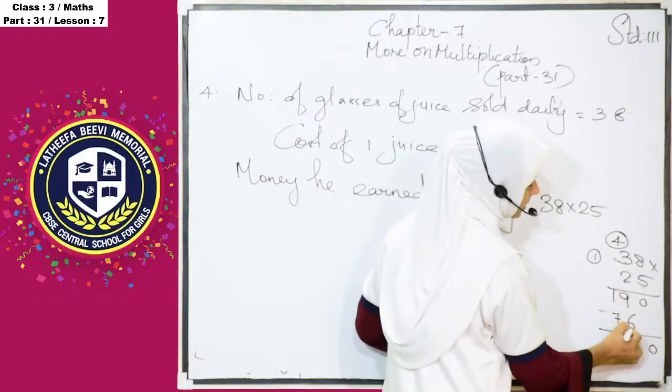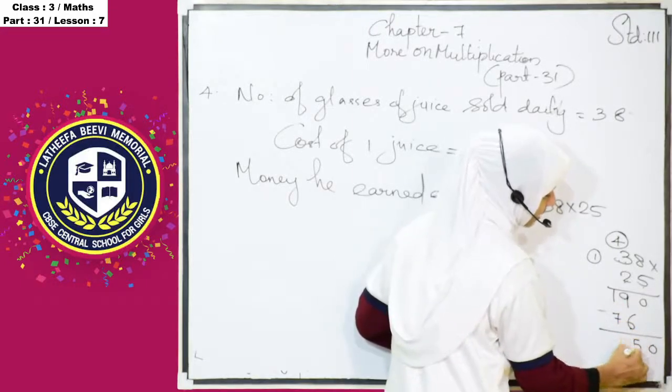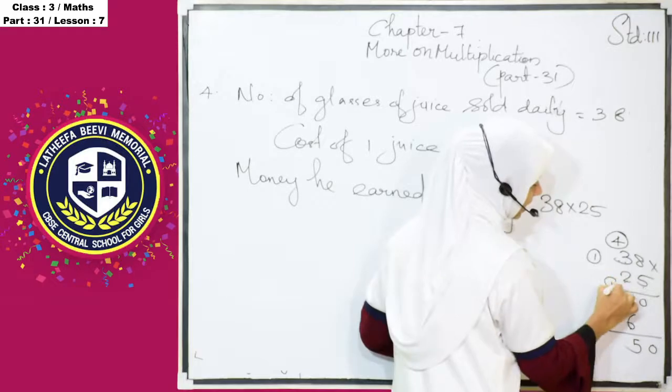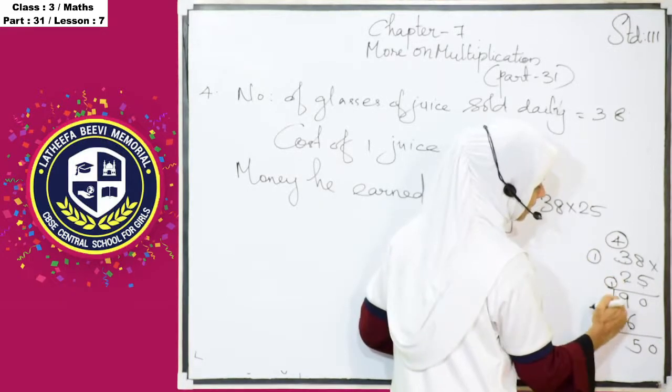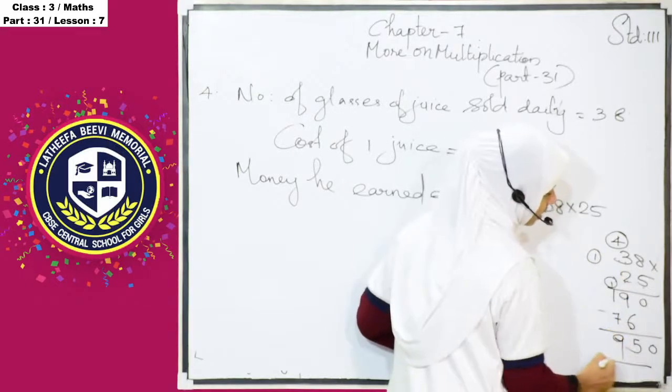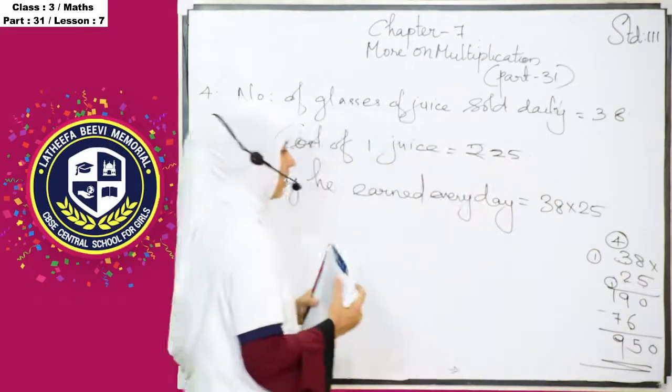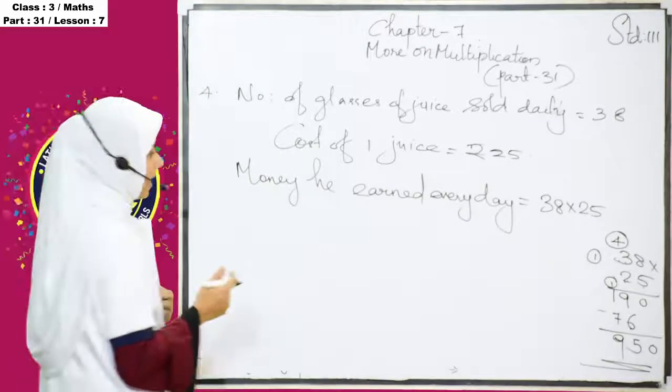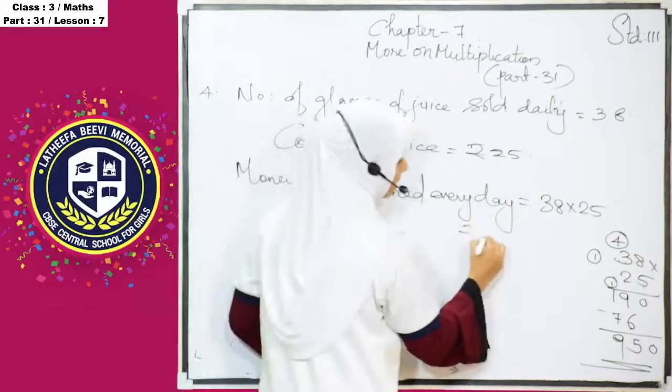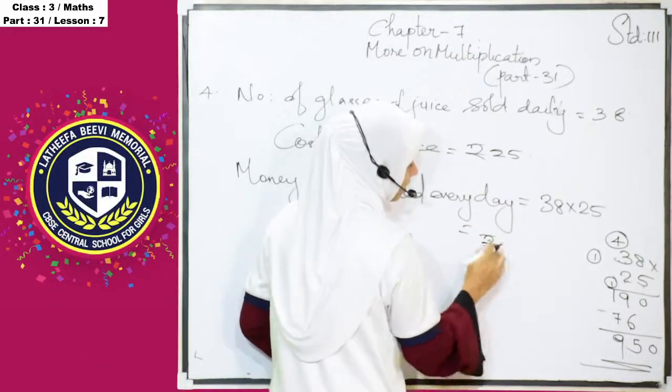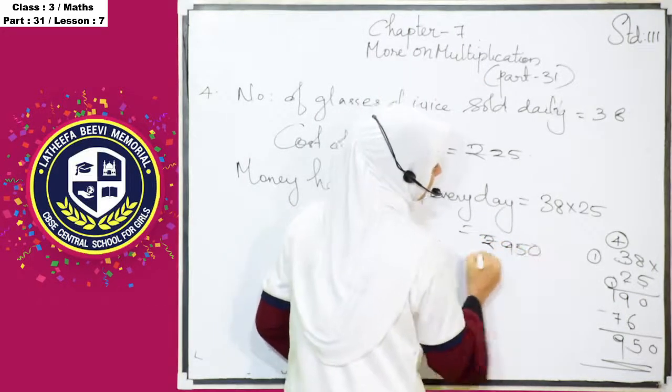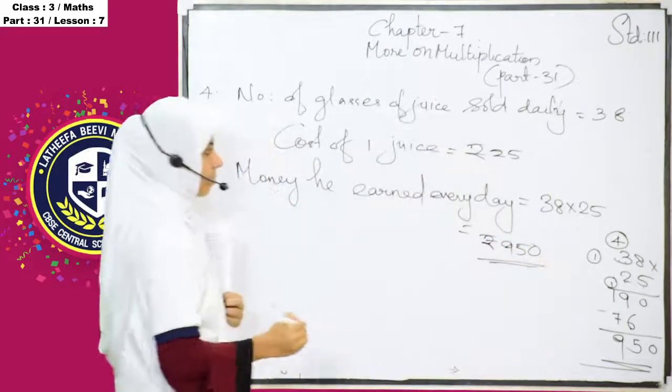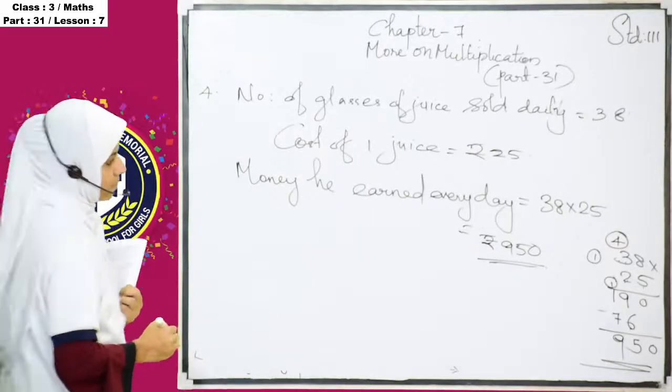So, 0, 9 plus 6, we know that 9 plus 6 is 15. 5 here, 1 is again carry over to the next place. And 7 plus 1, 8, 8 plus 1 is 9. So, the total money he earned in one day is equal to rupees 950.